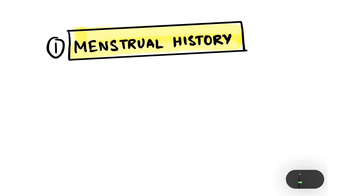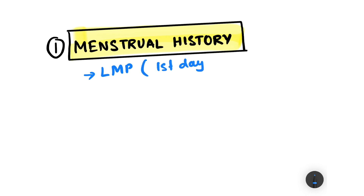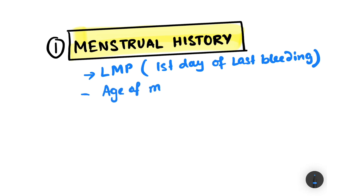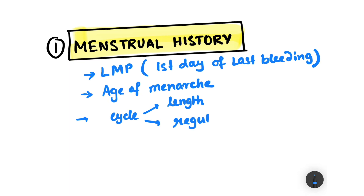Now we come to the menstrual history. We take menstrual history under the following headings: we start with the last menstrual period — specifically the first day of the last bleeding phase. After that, we note the age of menarche, followed by the cycle length and regularity of the cycle — whether it is regular or irregular.